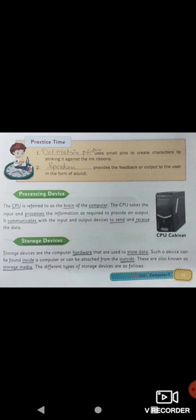I am sure we are ready on page number thirteen. Let us continue: processing device. The CPU is referred to as the brain of the computer. The CPU takes the input and processes the information as required to provide an output. It communicates with the input and output devices to send and receive data.